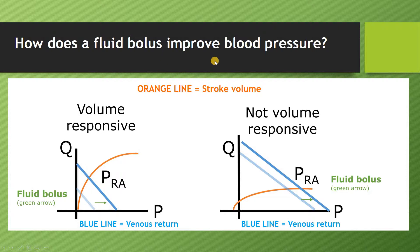Here are Frank-Starling curves. The orange line is stroke volume or cardiac output, the blue line is venous return, and the green line is your fluid bolus. When giving a fluid bolus, you're trying to increase venous pressure and move the venous return curve in a way that substantially boosts stroke volume. In the non-volume-responsive patient, they're already on a flat part of their stroke volume curve and you won't get much more benefit from a fluid bolus.